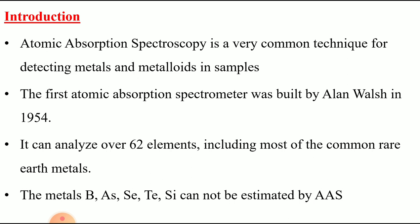The first Dutch scientist named Alan Walsh introduced atomic absorption spectroscopy in 1954. Around 62 elements can be easily analyzed using this technique. The most commonly included metals are common rare earth metals. The metals which are not estimated by atomic absorption spectroscopy include arsenic, selenium, silicon, and tellurium.